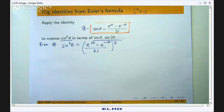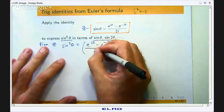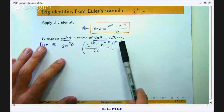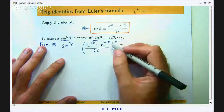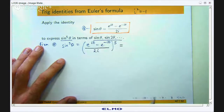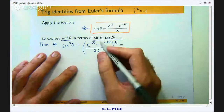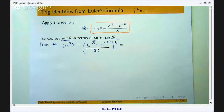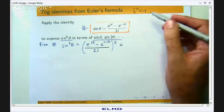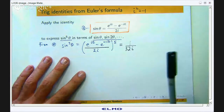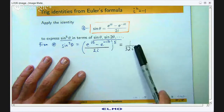We are going to have to expand it. I can expand the top part using Pascal's triangle; the bottom part can just be moved out front and taken to the power 5. So 2 to the power 5 is 32. For i to the power 5: i² equals negative 1, i⁴ equals negative 1 times negative 1 which is 1, so i⁵ is just i. Bringing this out front I will get 1 over 32 times i.